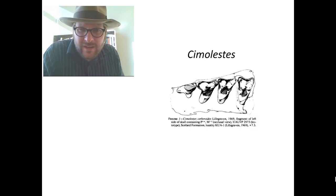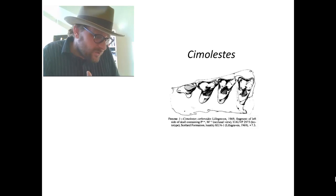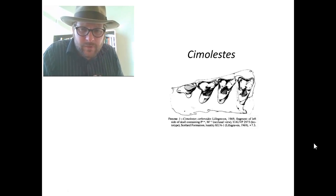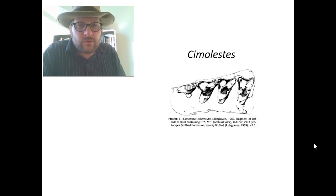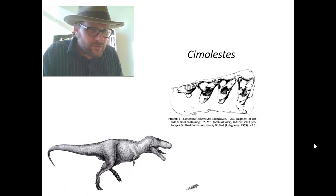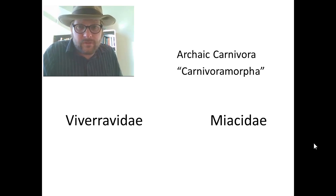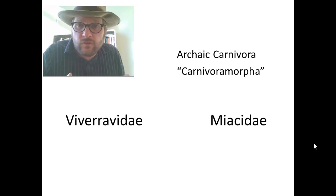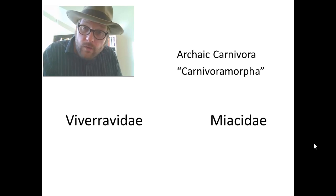Now Carnivora probably originated from a group called the Simolestids. This is Simolestes, from the late Cretaceous, the age of dinosaurs. You can look at their teeth and see there's a slight slant — not a carnassial quite yet — but you can see how a cutting surface could have developed in the Simolestids. So Simolestids are often attributed as being ancestral to the Carnivora. These little Simolestids were running around when T-Rex was roaming the landscape. When Tyrannosaurus Rex went extinct, the Simolestids diversified into what we refer to as the Archaic Carnivora, which is split into two groups called the Carnivora Morpha — the Viverravidae and the Miacidae.